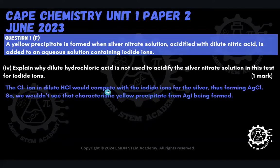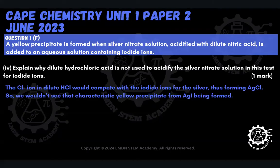The chloride ions present in the dilute HCl would compete with the iodide ions for the silver. We would end up forming silver chloride instead of silver iodide, which is not what we want. So we use dilute nitric acid, which helps us make a clear determination of what's present in that solution. If we used dilute HCl, we wouldn't see the characteristic yellow precipitate from AgI being formed, because silver chloride would be formed instead.